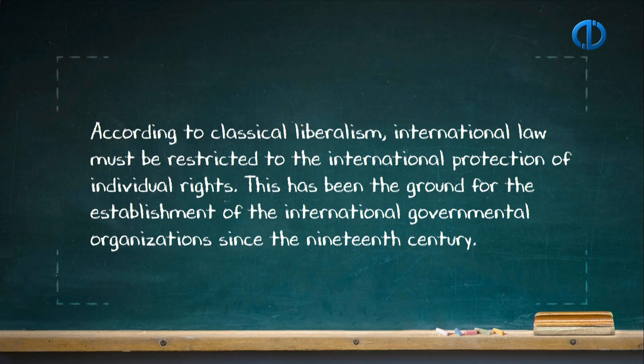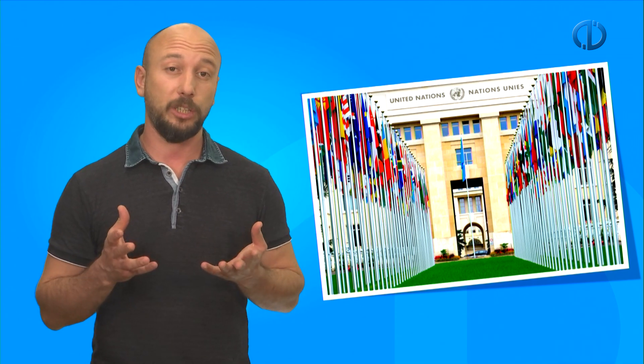According to classical liberalism, international law must be restricted to the international protection of individual rights. This has been the ground for the establishment of the international governmental organizations since the 19th century. However, classical liberals opposed to the extension of the tasks of the League of Nations and the way the United Nations was organized.